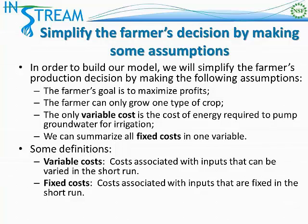Let's make the following assumptions to get us started. First, let's assume that the farmer's goal is to maximize profits. We're also going to assume that the farmer can only grow one type of crop. We're also going to assume that the only variable cost that the farmer has to pay is the cost of energy required to pump groundwater for irrigation.